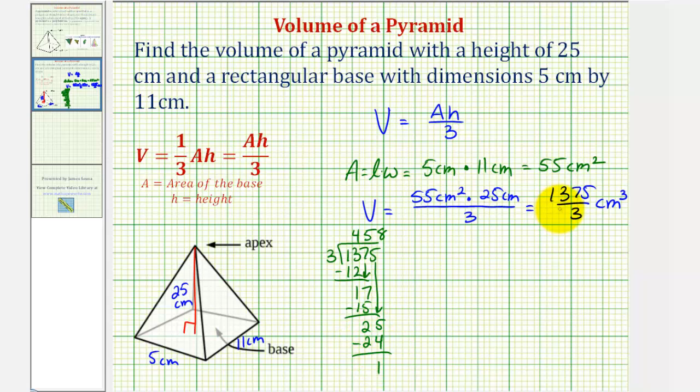So we can also express this volume as 458, and then for the fraction, we have the remainder over the divisor, giving us 458 and one-third cubic centimeters.